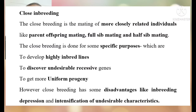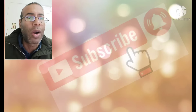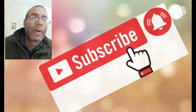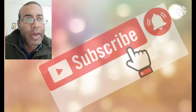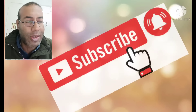Close inbreeding is done for some specific purposes. The first is for developing highly inbred lines. The second is to discover undesirable recessive genes. The third is to obtain uniform progeny. In this lecture, I will elaborate on all these things — how to develop inbred lines and how inbreeding helps in discovering undesirable recessive genes.